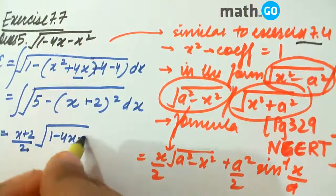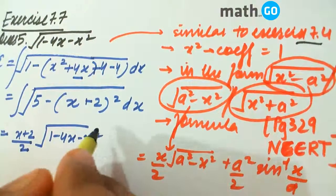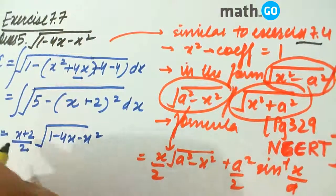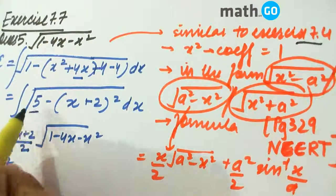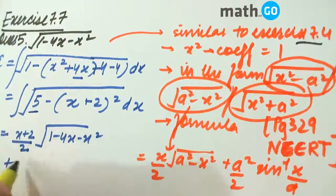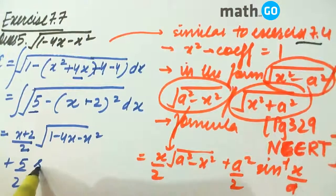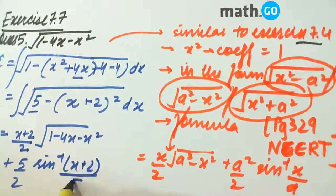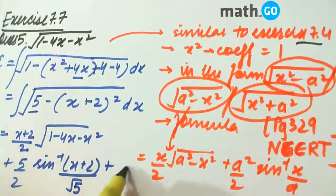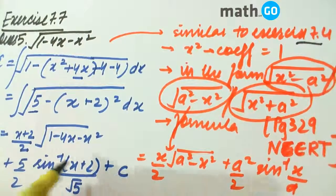So, a squared is 5, giving us plus 5 by 2 times sine inverse of (x + 2) divided by root 5, plus c. That is the answer.